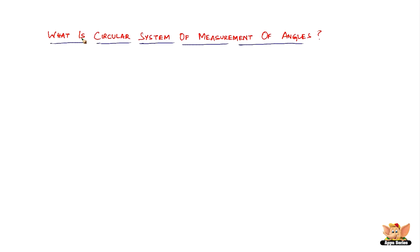In this video let us look into what is circular system of measurement of angles. In this system the unit of measurement is radian. We will see in a short time what is meant by radian and how do you define radian.